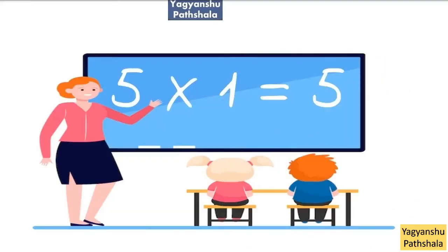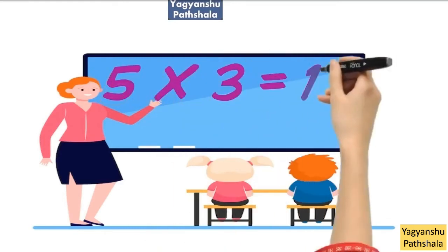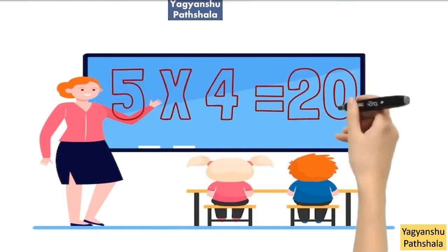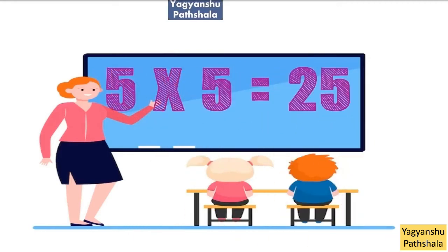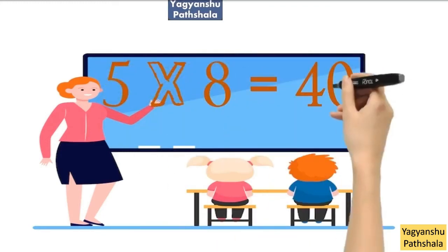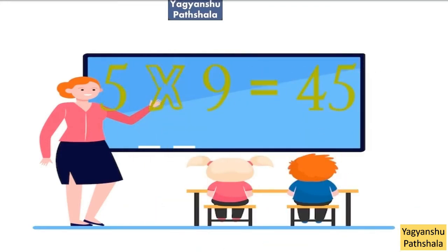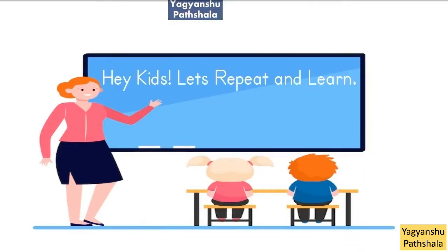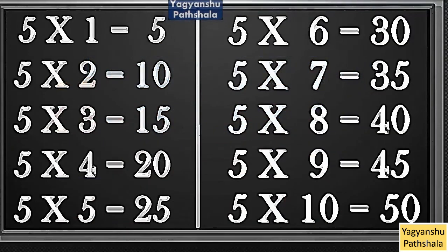5 into 1 is 5. 5 into 2 is 10. 5 into 3 is 15. 5 into 4 is 20. 5 into 5 is 25. 5 into 6 is 30. 5 into 7 is 35. 5 into 8 is 40. 5 into 9 is 45. 5 into 10 is 50. Hey kids, let's repeat and learn. 5 into 1 is 5. 5 into 2 is 10. 5 into 3 is 15. 5 into 4 is 20. 5 into 5 is 25. 5 into 6 is 30. 5 into 7 is 35. 5 into 8 is 40. 5 into 9 is 45. 5 into 10 is 50.